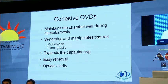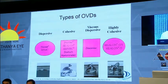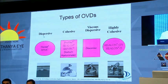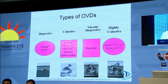Unfortunately, most cohesive OVDs are comparatively expensive, but they have very good optical clarity. The subtypes include dispersives — for example, Viscoat and the widely used HPMC — and cohesives like Provisc and Healon, which is the most commonly known, essentially sodium hyaluronate. Viscous dispersives include Discovisc, and the highly cohesive or viscoadaptive varieties are Healon-GV and Healon-5.